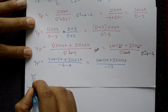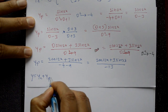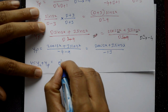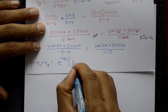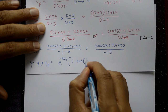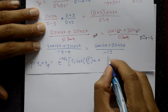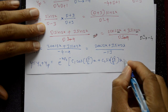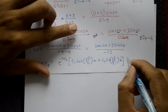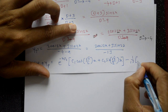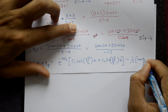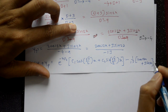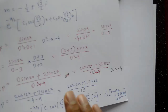The complete solution is y = yc + yp: y = e^(−x/2)[c₁ cos(√3/2 · x) + c₂ sin(√3/2 · x)] − (1/13)(2cos2x + 3sin2x). This is the required complete solution.